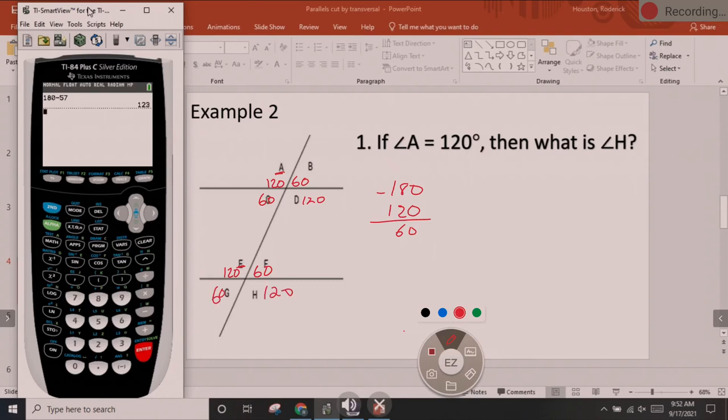And we see here they're asking for angle H. It is in the 120 position. It is an obtuse angle. It is the big one, not the small one. You have big and small angles. They're asking for H. H is 120.